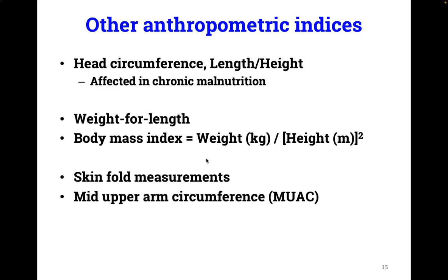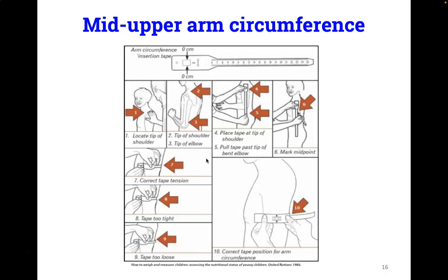What are the other markers of nutritional status in pediatrics, other than weight for age? Head circumference, and particularly length or height, can be affected in chronic malnutrition, and the latter factors into the newest definitions of malnutrition. Weight for length and body mass index have their limitations but are considered preferable to weight for age as measurements. Skinfold thickness measurements can be done but require expertise and training. A mid-upper arm circumference is an easy and reliable nutritional measurement done with simply a measuring tape — it measures both muscle and subcutaneous fat in the upper arm. To perform it: bend the arm at 90 degrees at the elbow, measure the distance between the acromion process and the olecranon process, mark the midpoint, then hang the arm loose and measure at the midpoint with the tape snug but not tight.